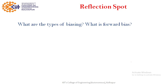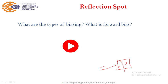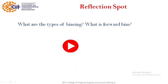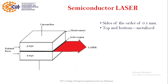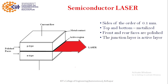What are the types of biasing? The P-N junction is biased either by forward or reverse bias. In forward bias, the P-type semiconductor is connected to the positive terminal of the battery and N-type is connected to the negative terminal. In semiconductor laser, we use forward bias. The size is of the order of 0.1 millimeter and the thickness of the active layer is only 1 micrometer.